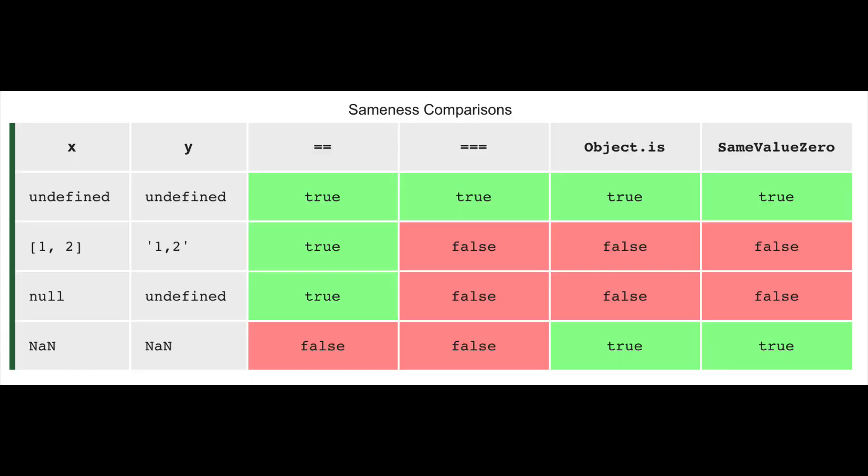We can see that in the MDN chart which is available to us. You see the four methods of comparison: double equal to, triple equal to, Object.is, and same value zero algorithm. This algorithm is basically just like using triple equal to all the time, except for the fact when two numbers are not a number. So you can manually hard code that logic into the same value zero algorithm if you want to design it yourself — and now you have your own same value zero algorithm.